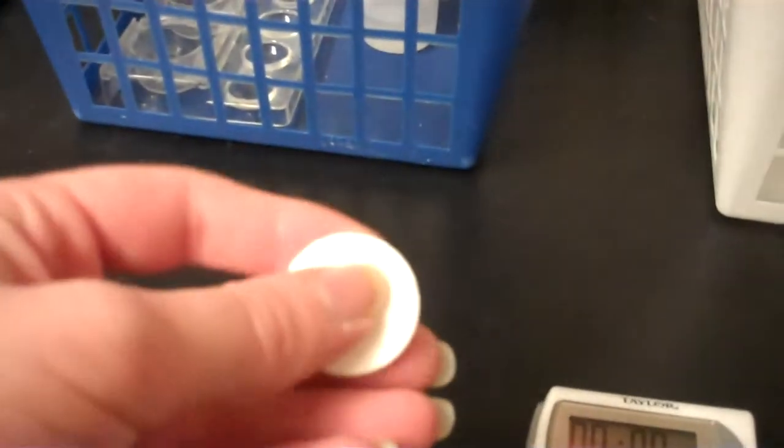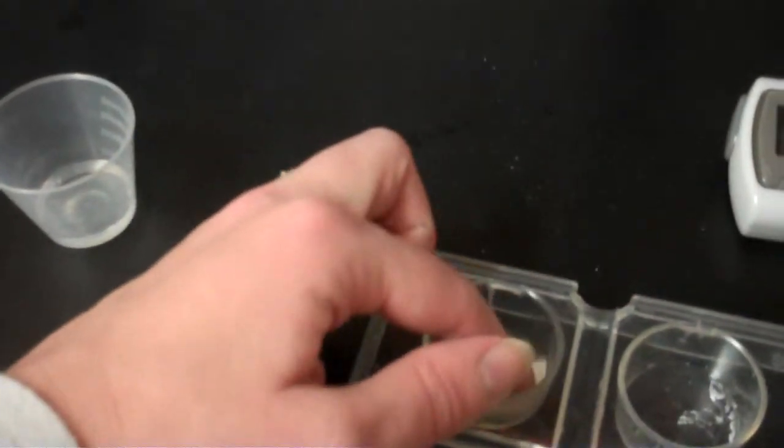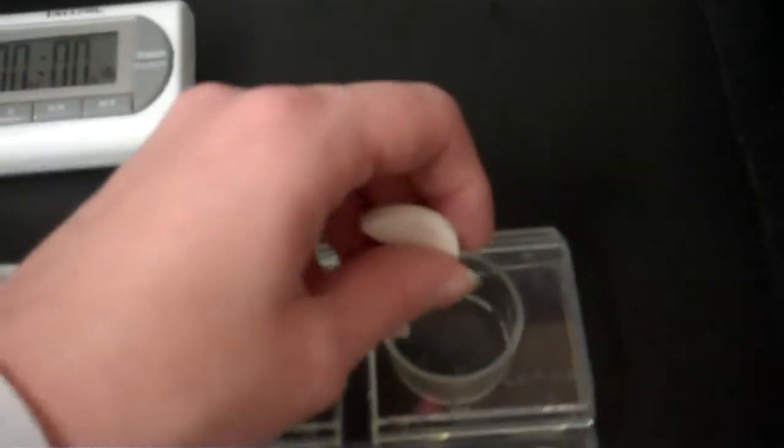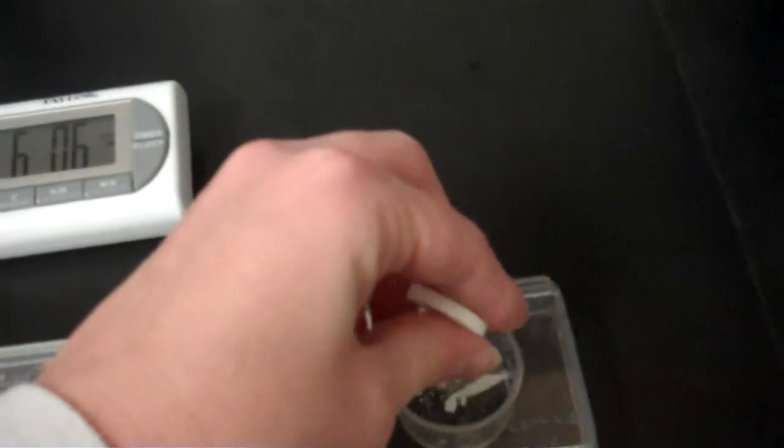First, I'm going to pick up one of these antacid tablets and break it in half. One half I'm going to put into tray A and keep whole. The other one I'm going to do a little bit of mechanical breakdown by breaking it into pieces.